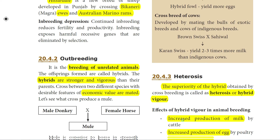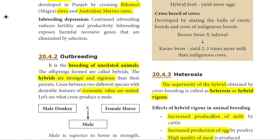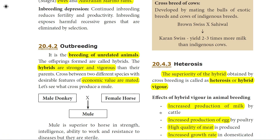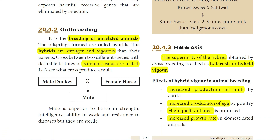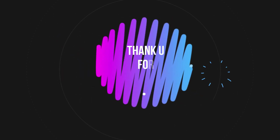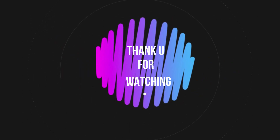The effects of hybrid vigour in animal breeding include: increased milk production by cattle, increased production of eggs by poultry, high quality meat, and increased growth rate in domesticated animals.